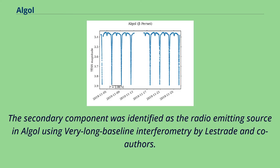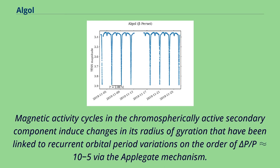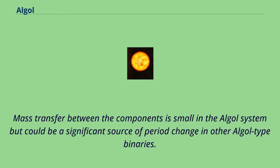The secondary component was identified as the radio-emitting source in Algol using very long baseline interferometry by Lestrade and coauthors. Magnetic activity cycles in the chromospherically active secondary component induce changes in its radius of gyration that have been linked to recurrent orbital period variations on the order of ΔP/P ~ 10^-5 via the Applegate mechanism. Mass transfer between the components is small in the Algol system but could be a significant source of period change in other Algol-type binaries.